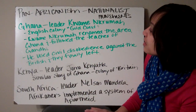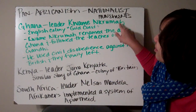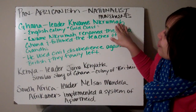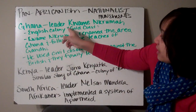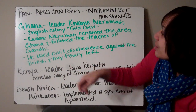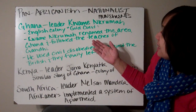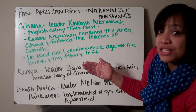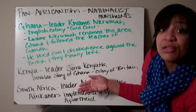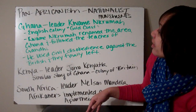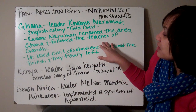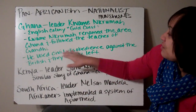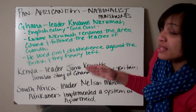Looking at several different countries in Africa that had their own nationalist movements: Ghana's nationalist movement leader was Kwame Nkrumah. Ghana was an English colony — England called it the Gold Coast. Kwame renamed the area to Ghana because one of the most prevalent ancient kingdoms in Africa was the Kingdom of Ghana, so he restored that name to that area. He also followed the teachings of Gandhi, so he used civil disobedience and nonviolent protests against the British, and they finally left Ghana.